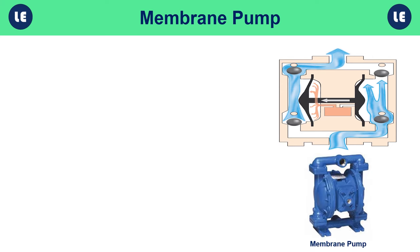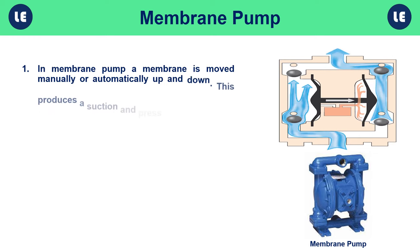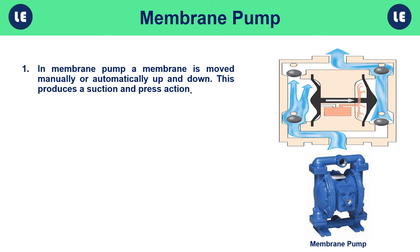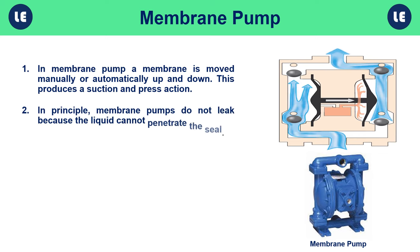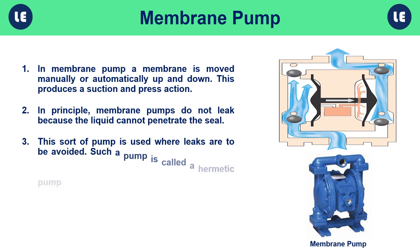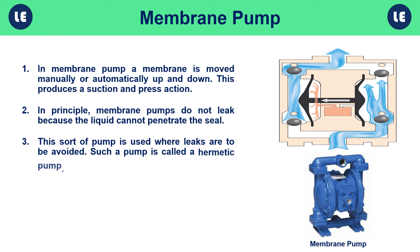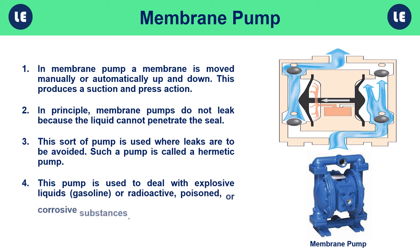In a membrane pump, a membrane is moved manually or automatically up and down, producing a suction and press action. Membrane pumps do not leak because the liquid cannot penetrate the seal. This type of pump, called a hermetic pump, is used where leaks are to be avoided — such as with explosive, radioactive, poisoned, or corrosive substances.